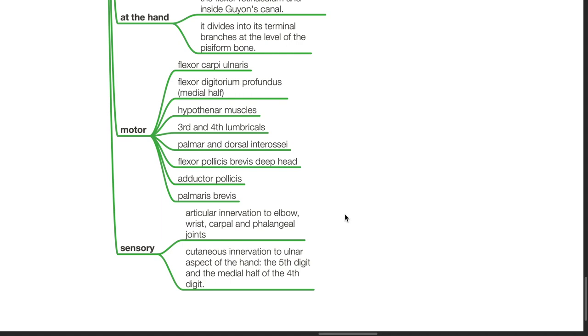Sensory supply includes articular innervation to the elbow, wrist, carpal and phalangeal joints, and cutaneous innervation to the ulnar aspect of the hand, the fifth digit, and medial half of the fourth digit.